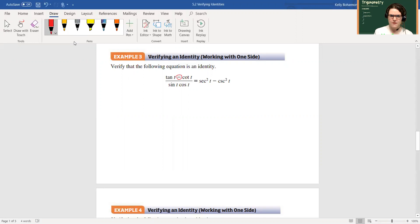The first thing I'm going to do is split this up. This shows me that I can actually split this into two fractions. They've been combined by subtraction, so this is a common denominator, so I could actually rewrite this as tangent t over sine t cosine t minus cotangent t over sine t cosine t.